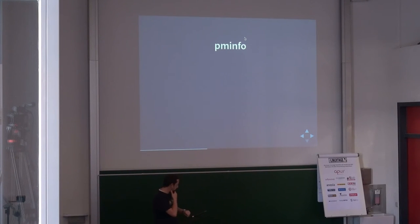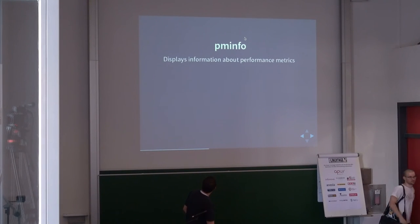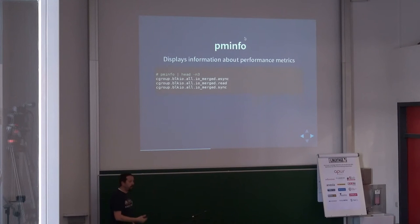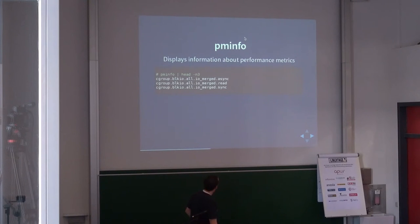The simple command to see what a metric does is PMinfo. If you run it without any arguments, it will print all the metrics that PMCD is configured for — a few hundred depending on how many PMDAs are configured. By default it's a few hundred on a Linux box. On my box it was 1,600 collected metrics.